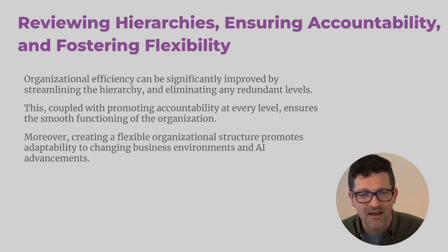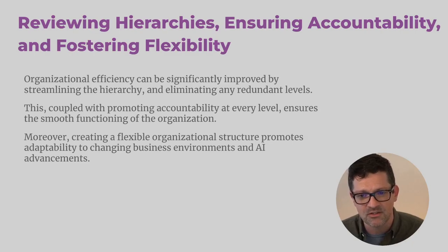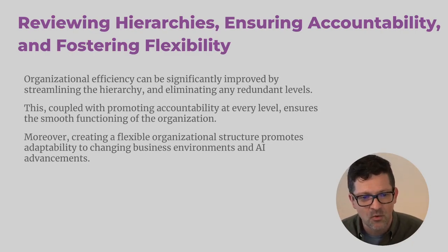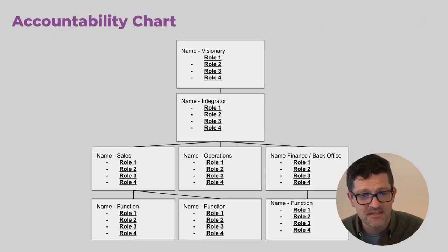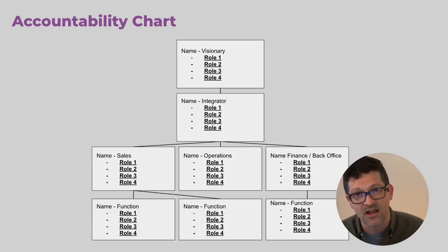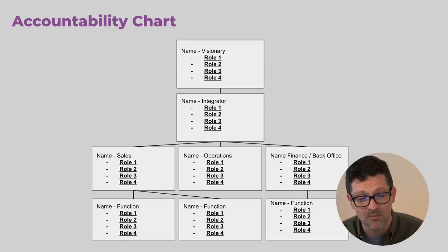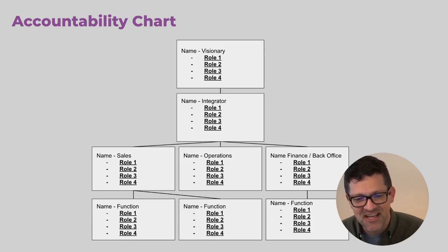Now we're going to dive a little bit deeper into the core of this — reviewing the hierarchy of your organization, ensuring accountability, and looking at ways where you can make things very flexible. This is the accountability chart outlined in the book Traction by Gino Wickman. I've gotten a ton out of that book and it's going to come up again and again in all of my videos.